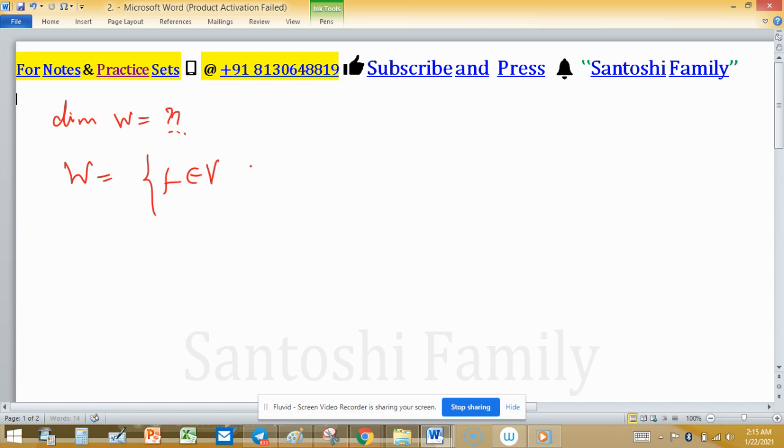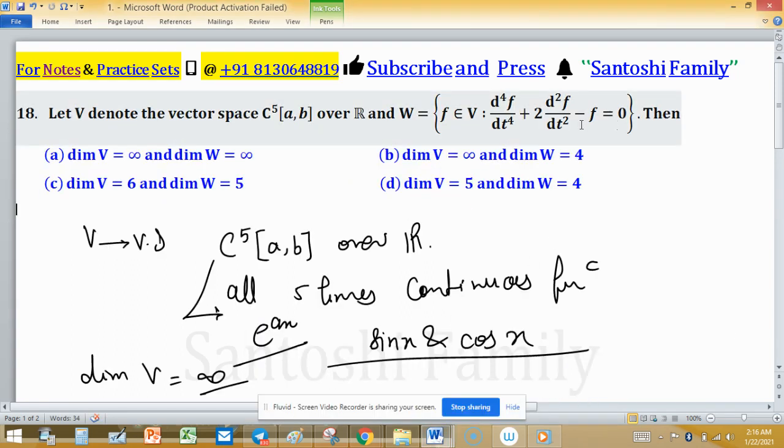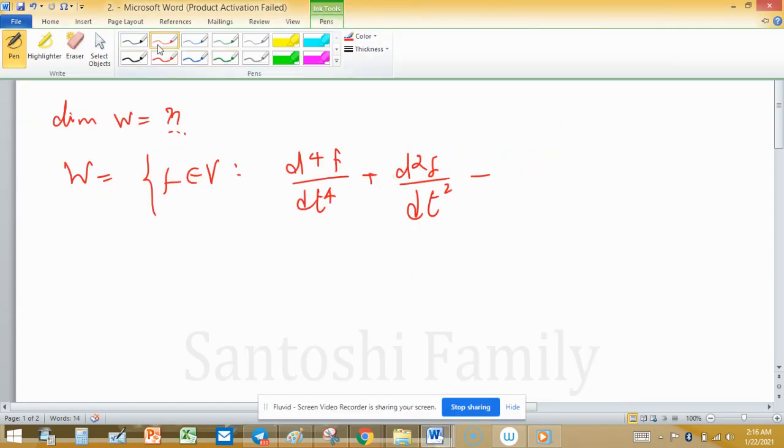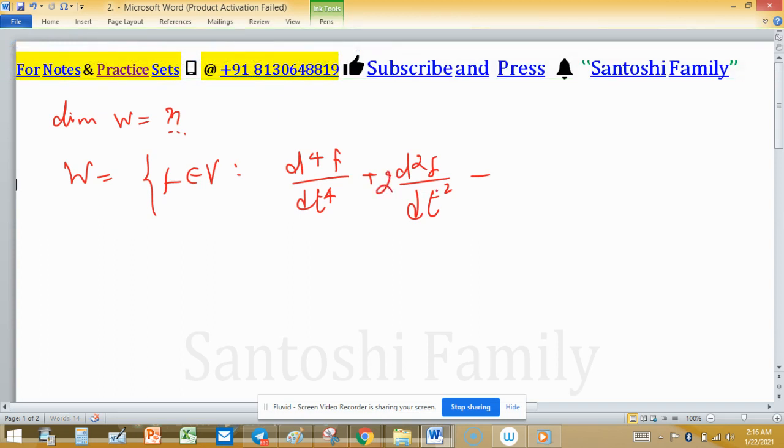W is all those F which are coming from V such that d^4f/dt^4 + d^2f/dt^2 - 2f = 0. W is defined in this way.